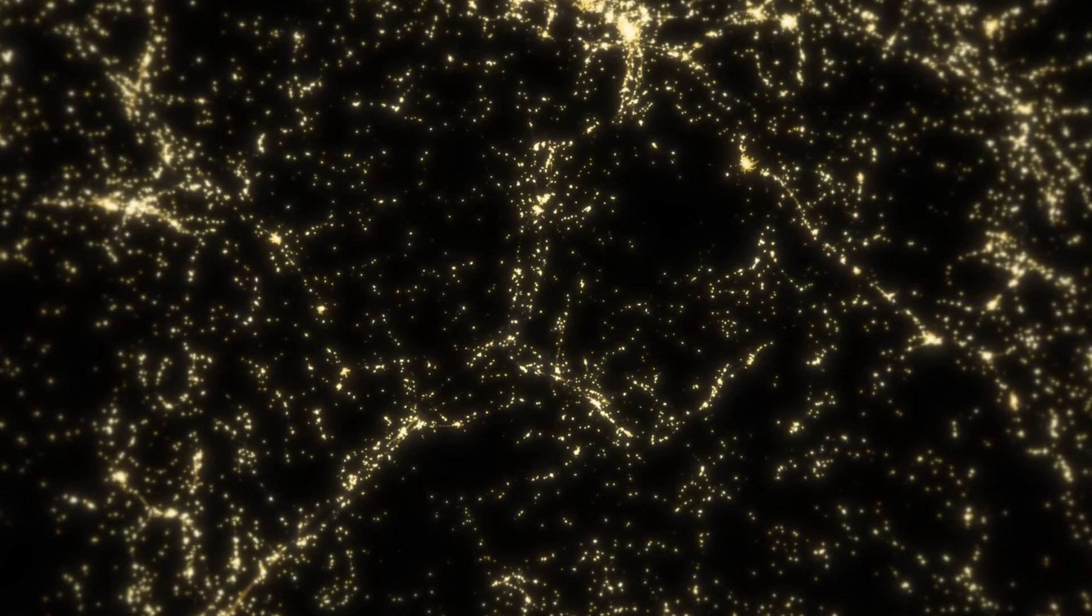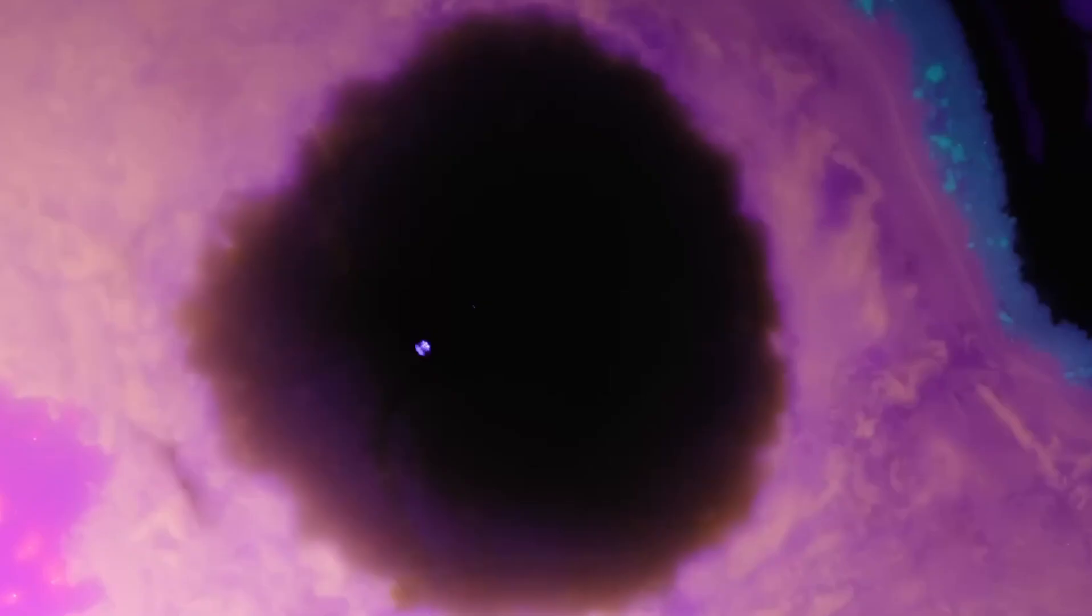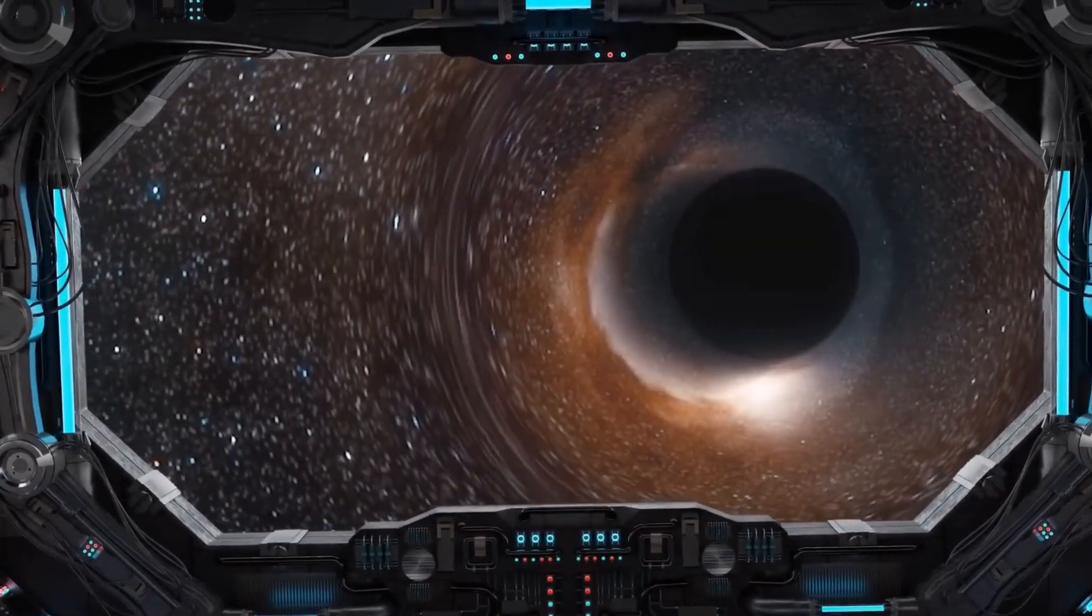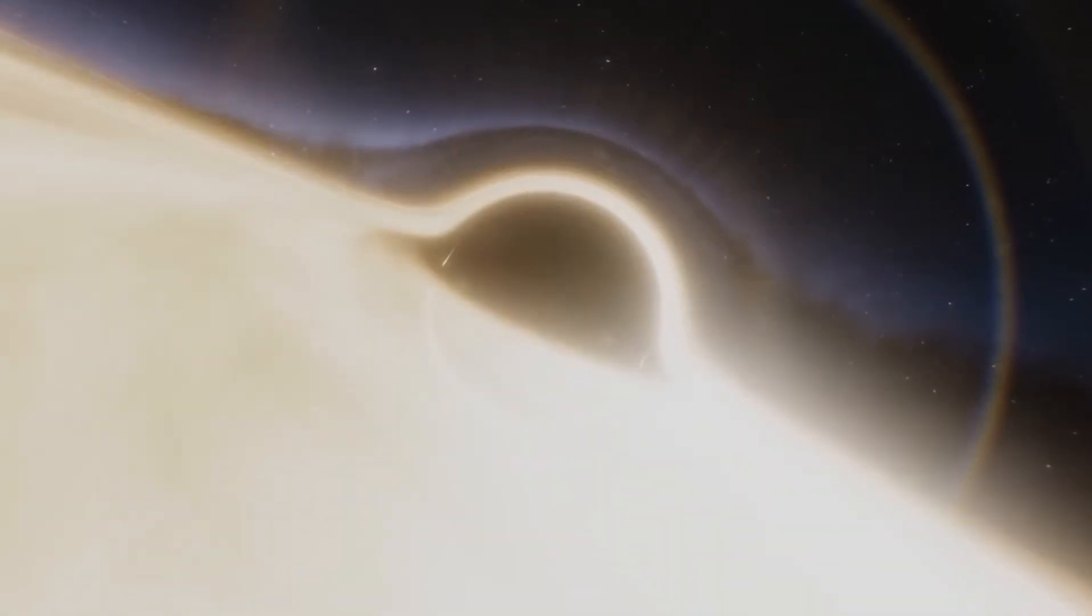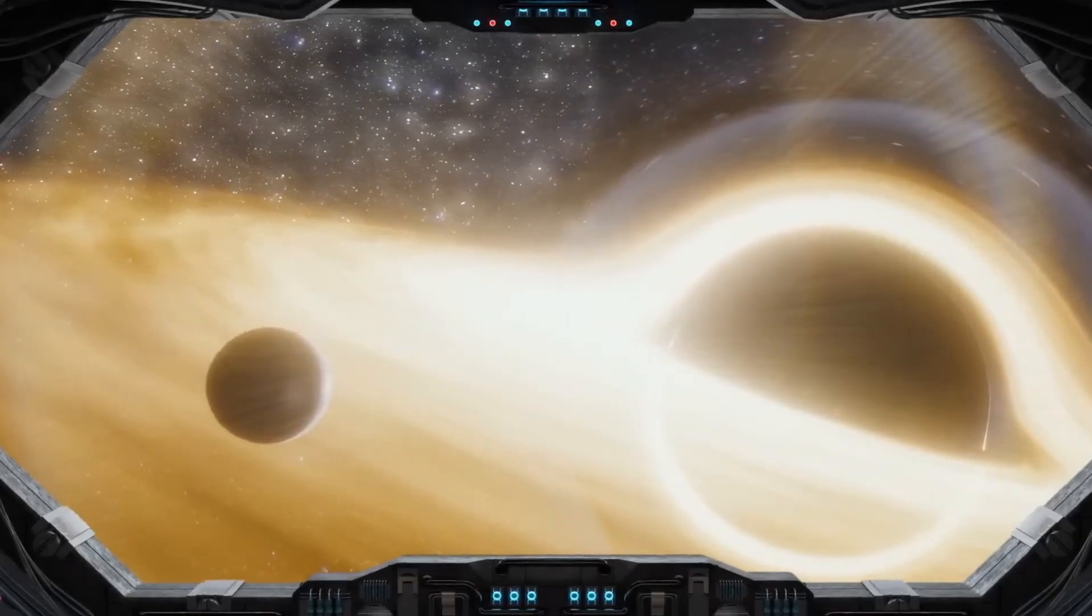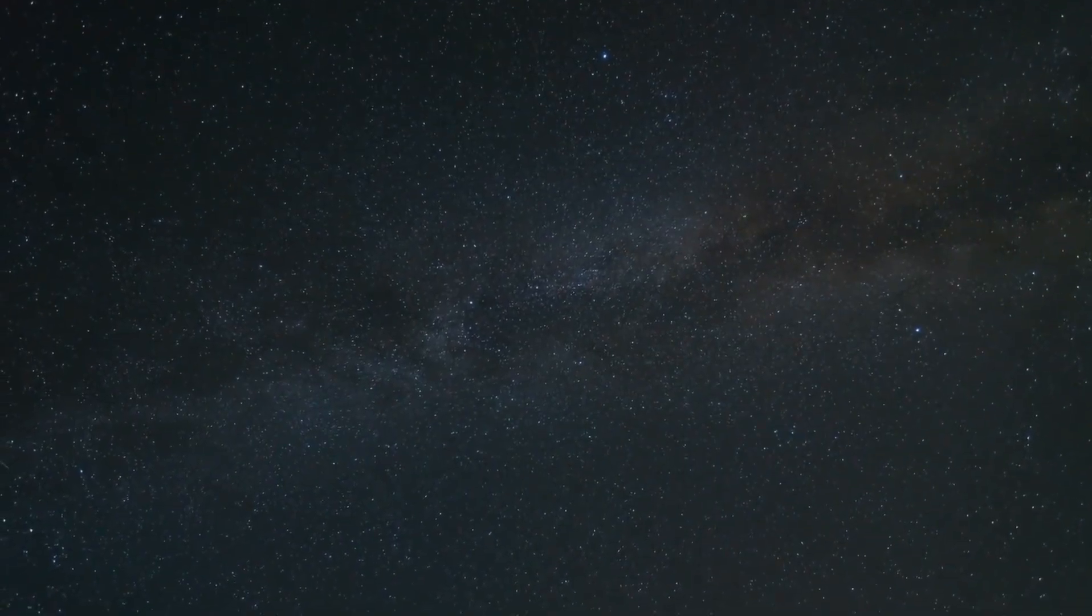Yet, as they mapped the shimmering expanse of the Milky Way, they could hardly imagine the vast cosmic structures that lay beyond their field of view. Let's go back to the 20th century. The advent of modern telescopes and observational techniques has opened up the universe like never before. Astronomers realized that our Milky Way is just one of billions of galaxies scattered throughout an unimaginably vast universe. When the distribution of galaxies was plotted, they began to notice something strange.